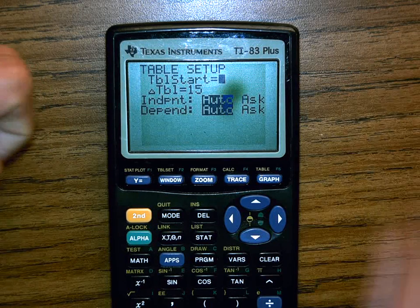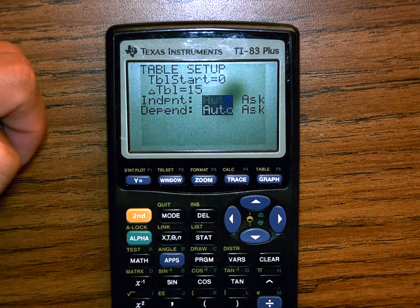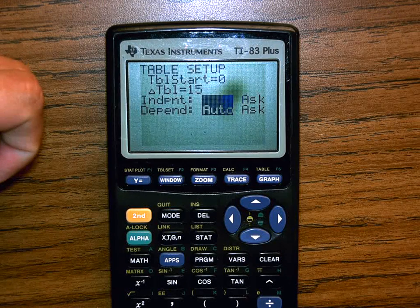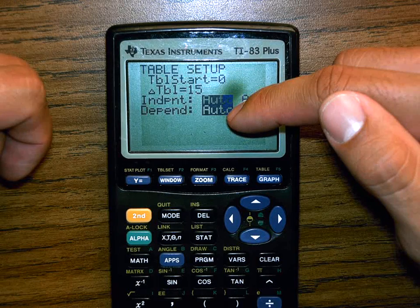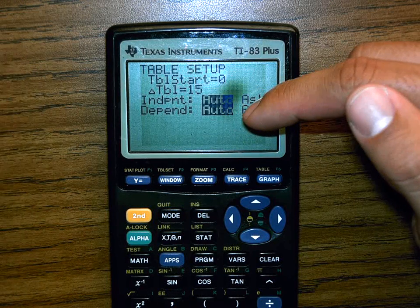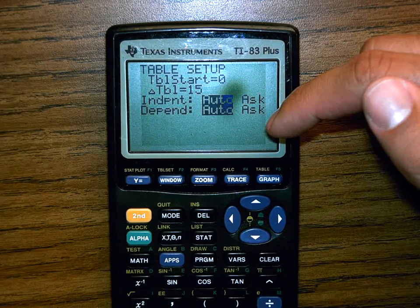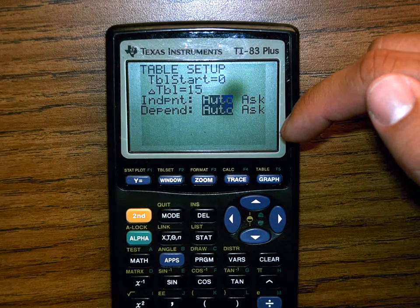Can you see how we're doing this? Enter. Enter. Once you change it from zero to 15, and then independent auto, dependent auto. I want you to automatically fill in the blanks calculator. I don't want you to ask me. I want you to do it.